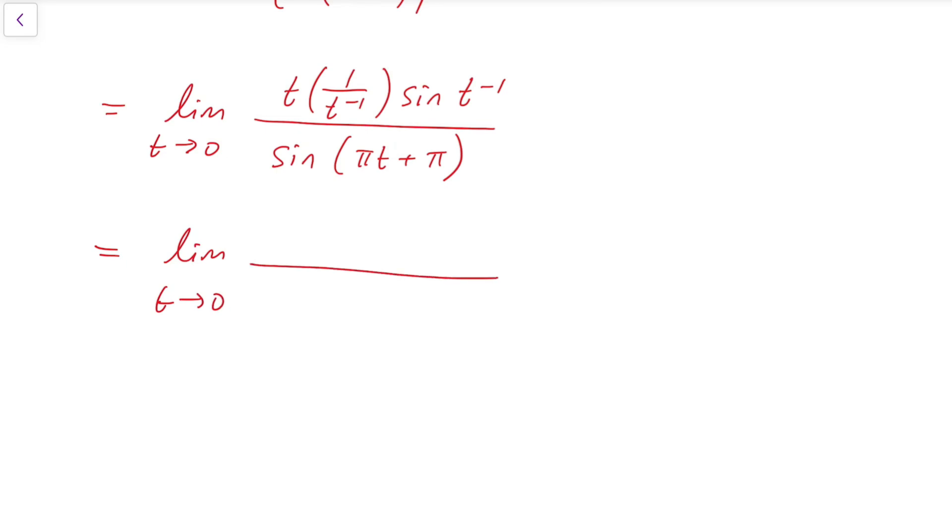Then, for the numerator, it becomes t times the fraction sin(t⁻¹) divided by t⁻¹. And for the denominator, I will use the compound angle formula, which we will have sin(πt) cos(π) plus cos(πt) sin(π).